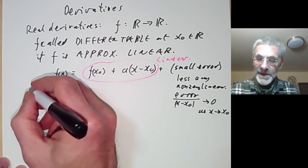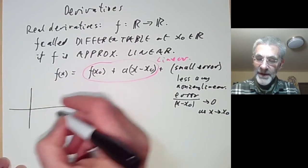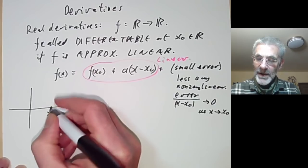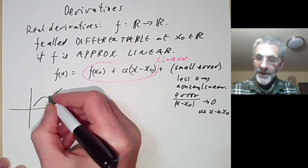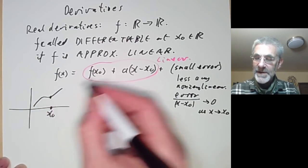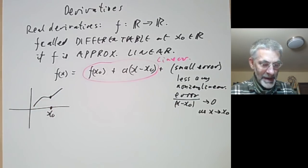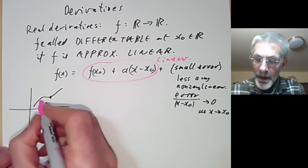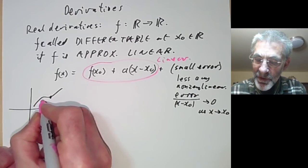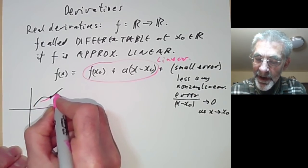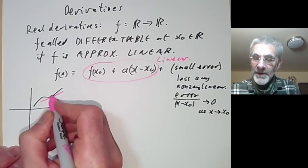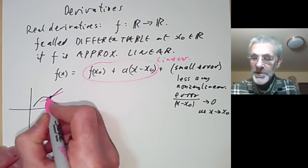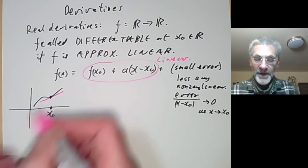All this is saying is that if x zero is this point here and the graph of f looks like this, then the linear term is going to be some sort of linear function, and f being differentiable means that f should be rather close to this linear function near that point.